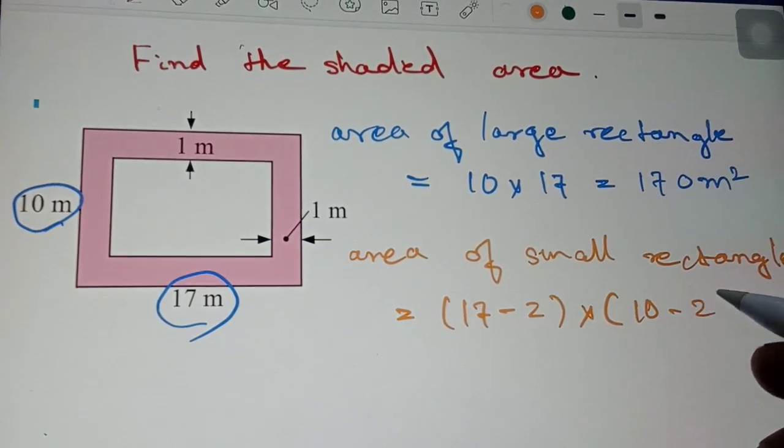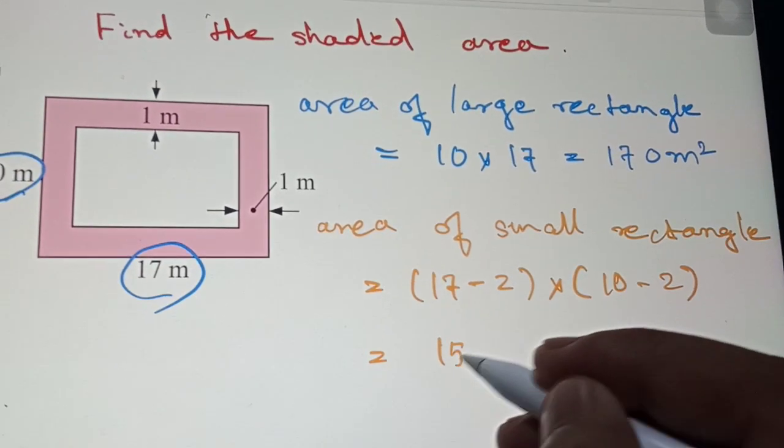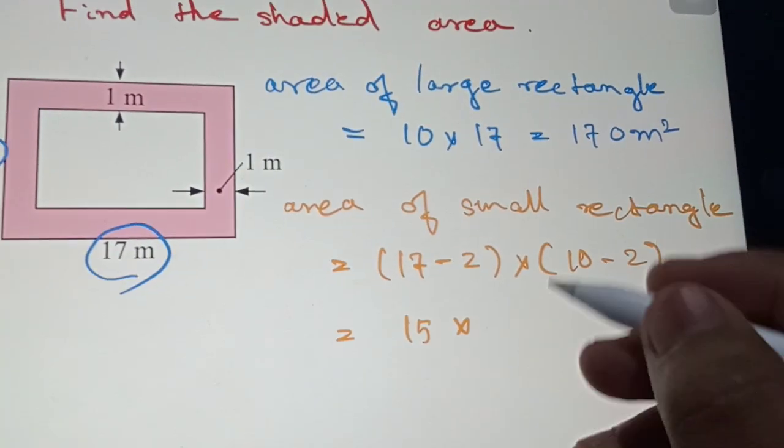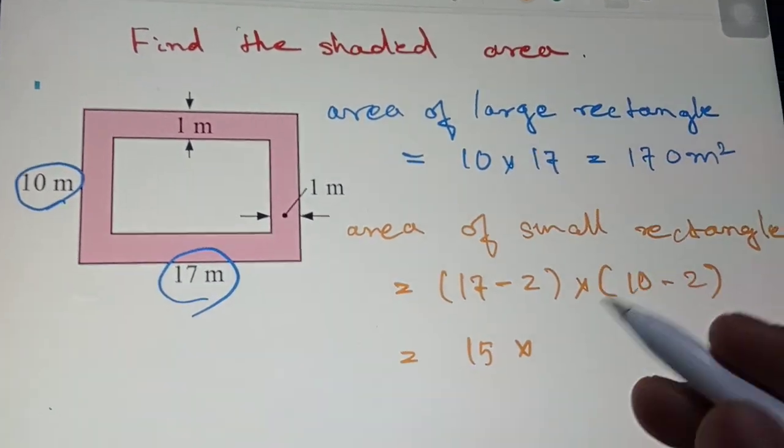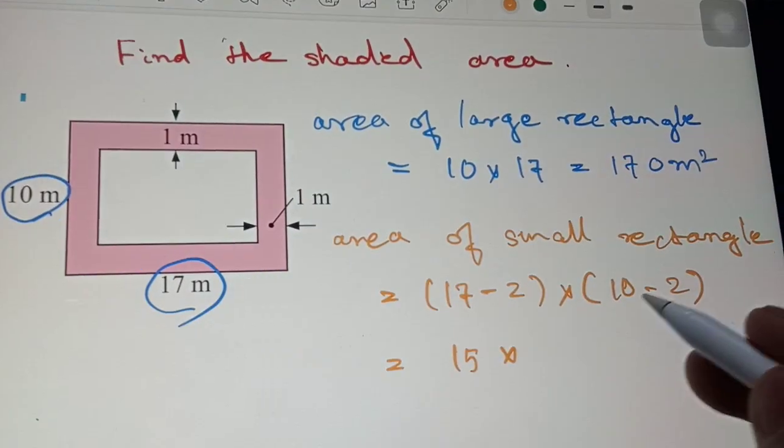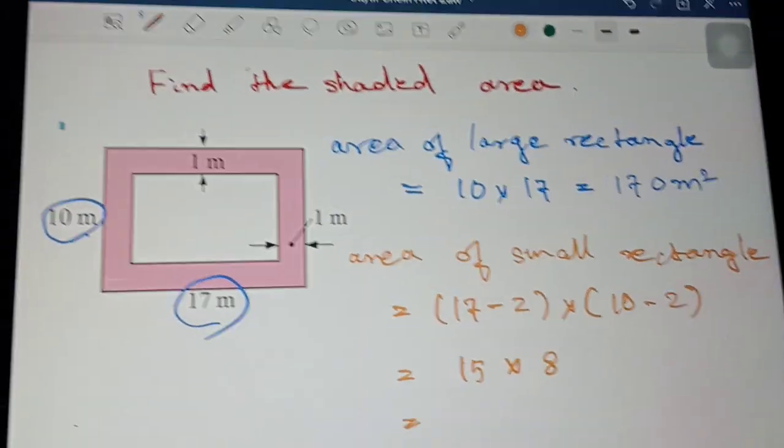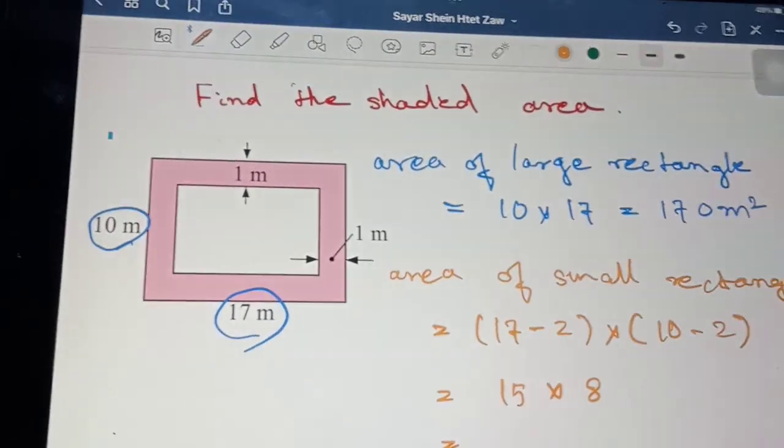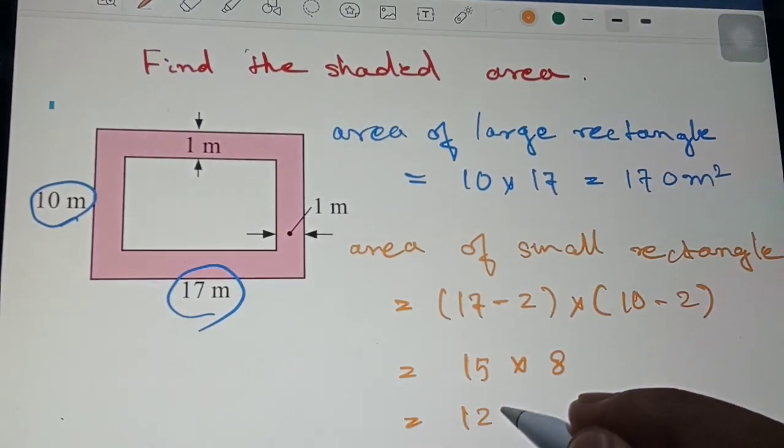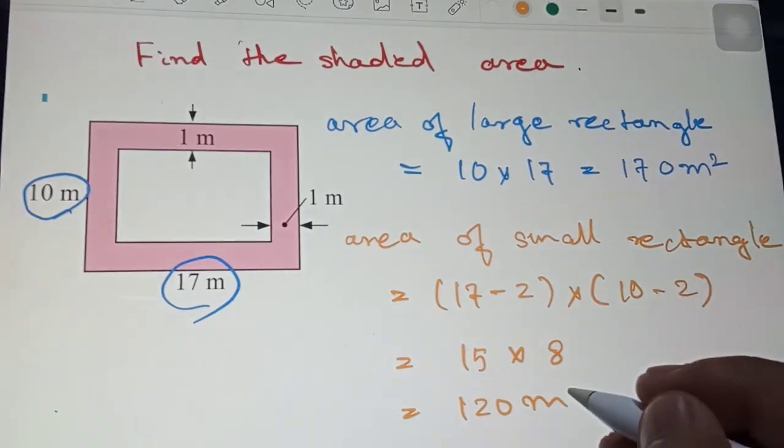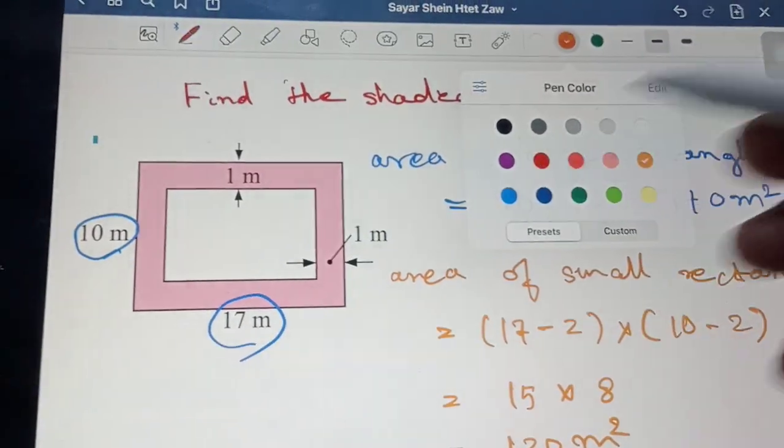15 multiply, 15. That's 120 meter square. Shaded area.